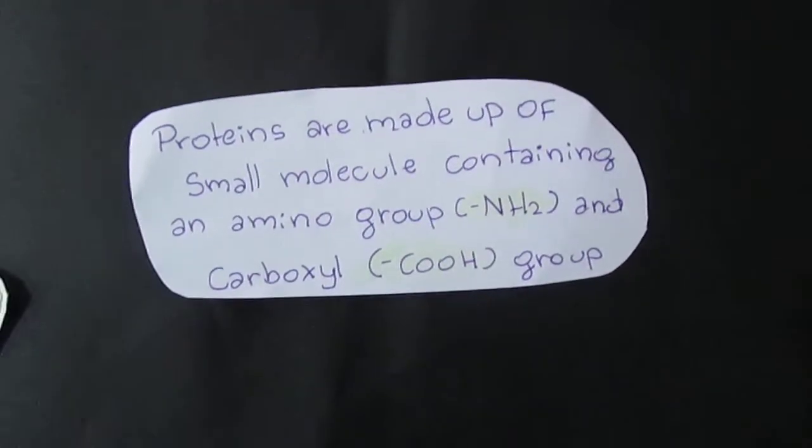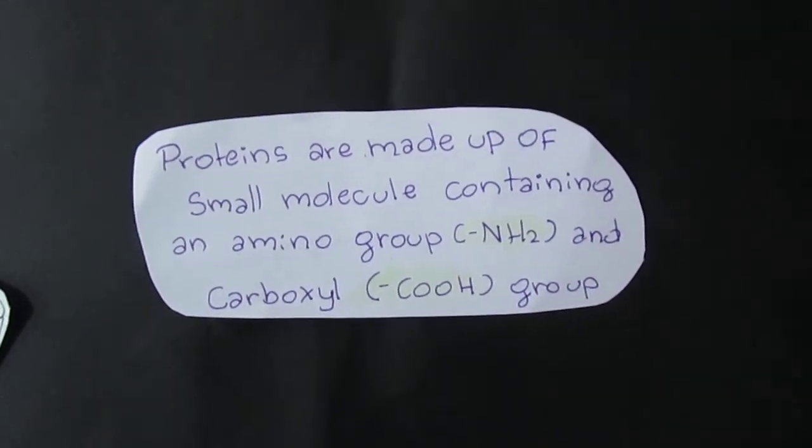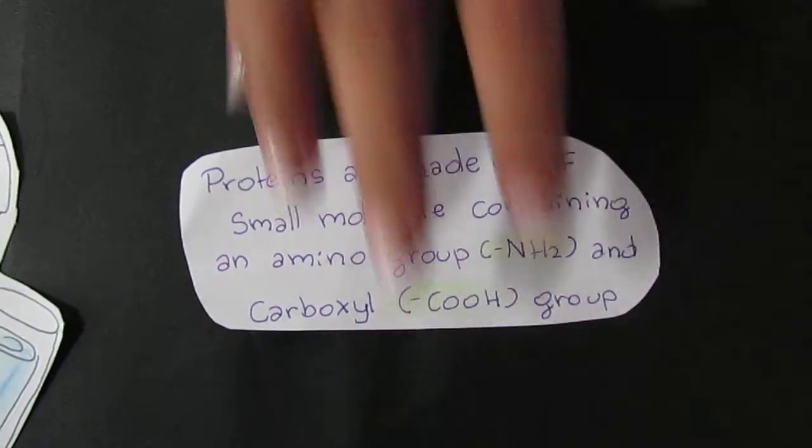Proteins are made up of small molecules containing an amino group, or NH2, and a carboxylic COOH group. So now let's talk about amino acids.